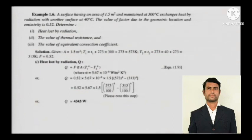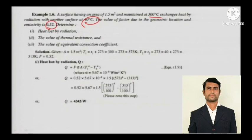The next problem: a surface having an area of 1.5 m² maintained at 300 degree Celsius exchanges heat by radiation with surroundings at 40 degree Celsius. The value of the factor due to geometric location and emissivity (epsilon) is 0.52. Determine the heat loss by radiation, the thermal resistance, and the equivalent convection coefficient.